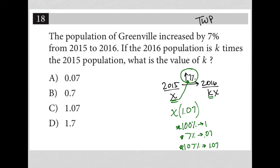So the question is saying that K must be this value, because that's what I would put in for K in order to get 1.07 times X. So our answer for the value of K must be choice C at 1.07.